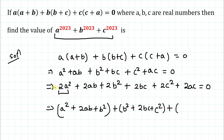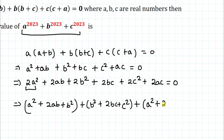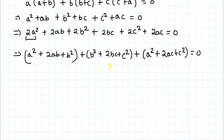Continuing the grouping: we take a² + 2ac + c² as the third group. So we now have three grouped expressions, and we know the algebraic identity that (a+b)² equals a² + b² + 2ab.